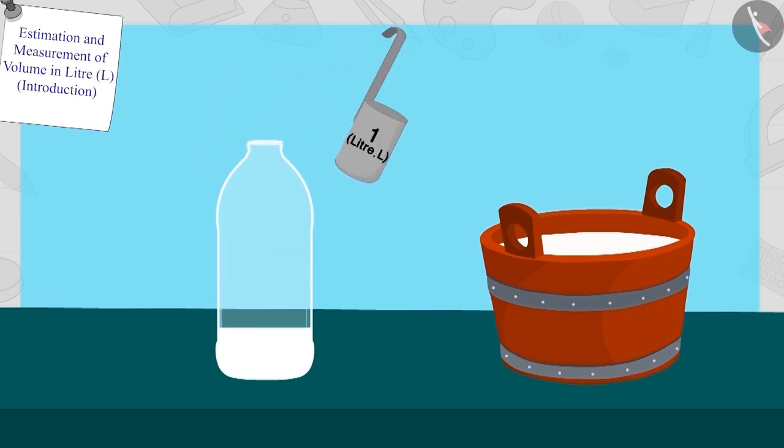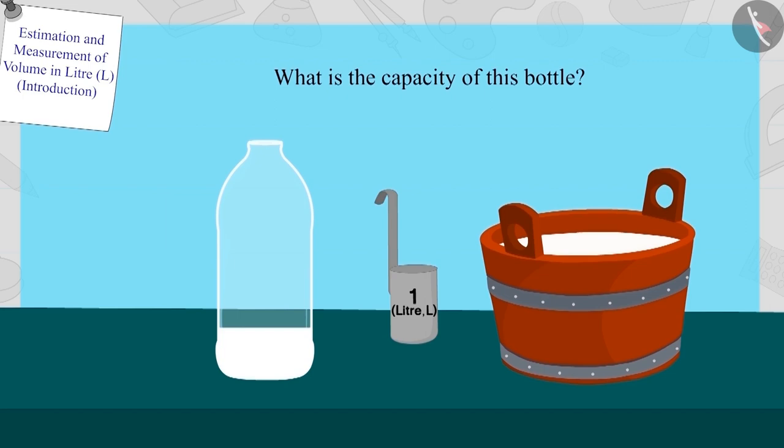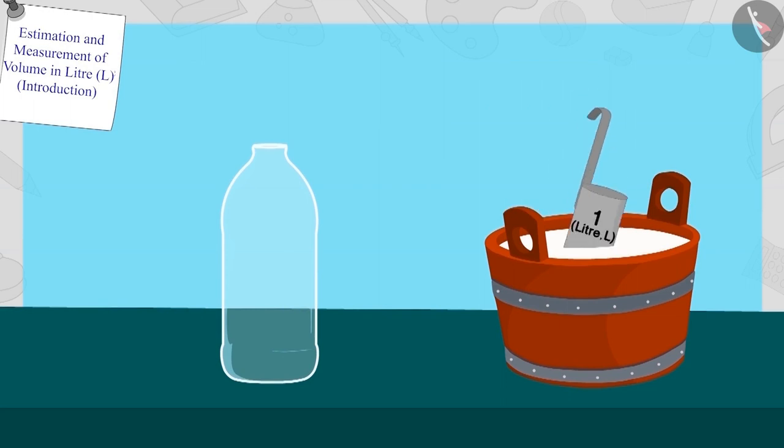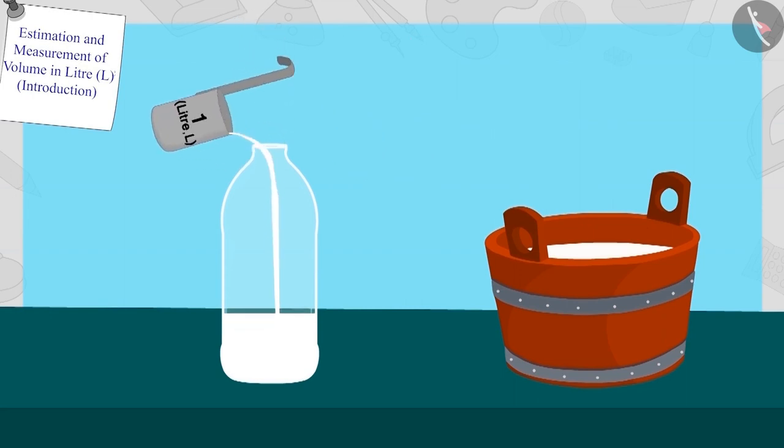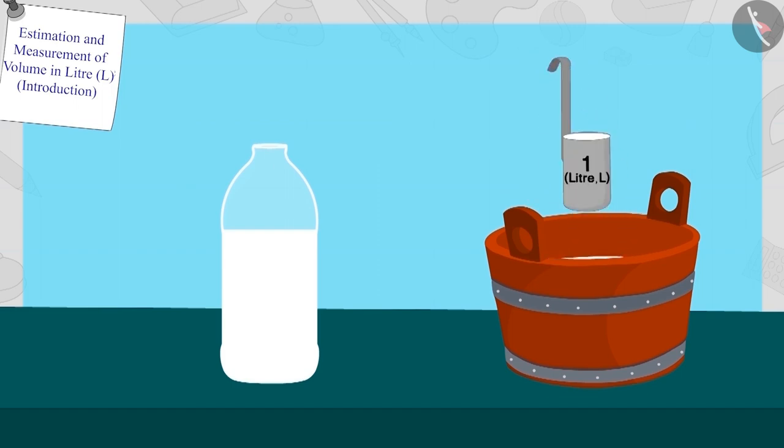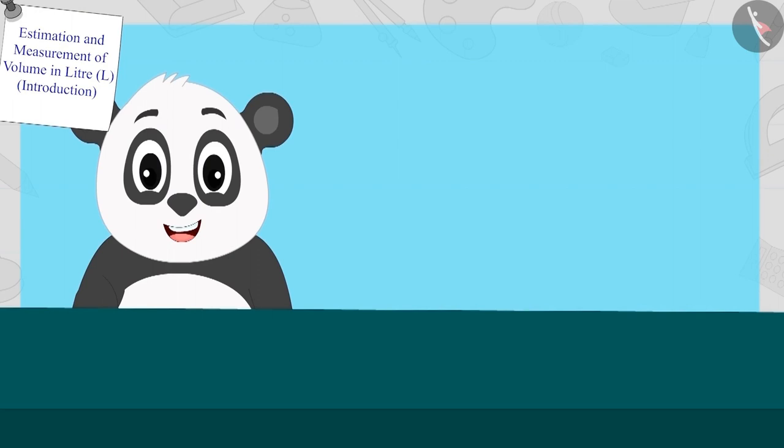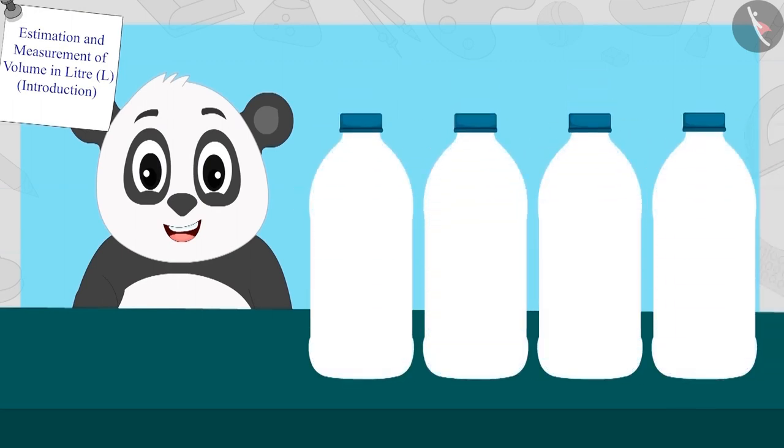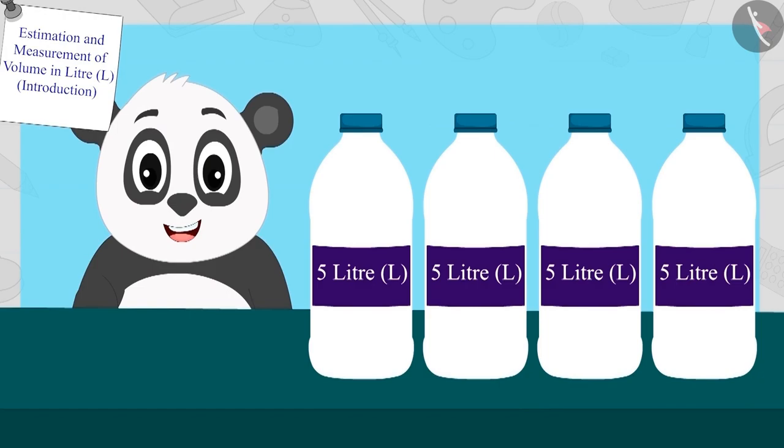After pouring one liter of milk in the bottle, the bottle was this full. Children, can you guess what the capacity of this bottle is? One, two, three, four, and five. Yes, the capacity is five liters. Golu immediately put stickers of five liters on bottles similar to these.